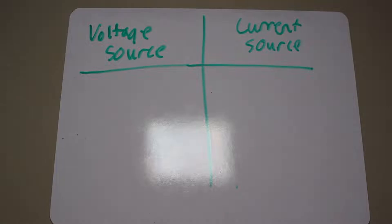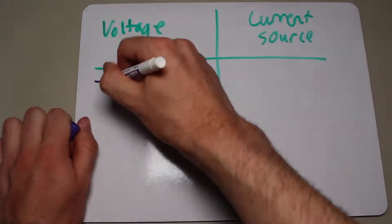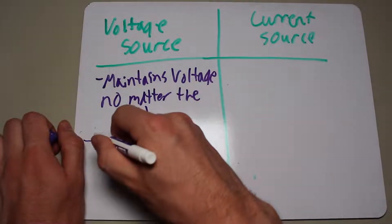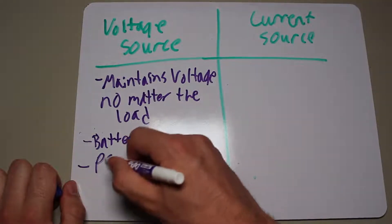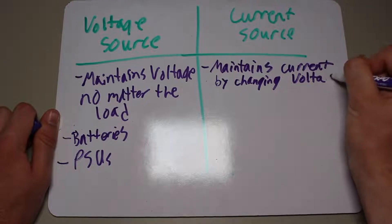You likely already know what a voltage source is. It is just a device that will maintain its output voltage however possible. They are quite common, and you can find them in forms such as batteries or power supplies. A current source, on the other hand, is basically the same, except that it maintains its current as opposed to its voltage.